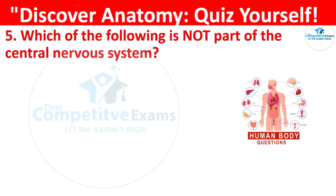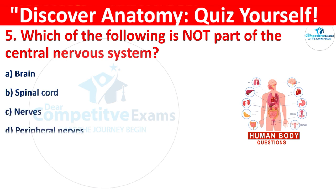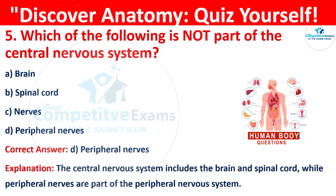Question 5: Which of the following is not a part of the central nervous system? Your options are: brain, spinal cord, nose, or peripheral nerves. The correct answer is D, that is peripheral nerves. The central nervous system includes the brain and spinal cord, while the peripheral nerves are part of the peripheral nervous system.